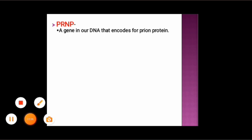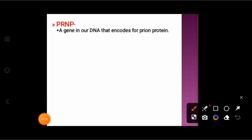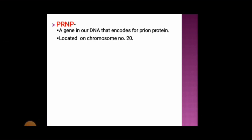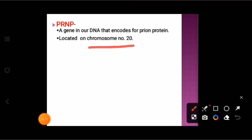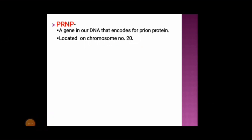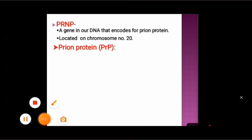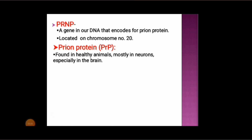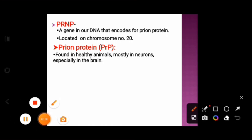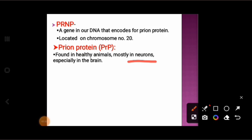First is PRNP — basically this is a gene, a gene in our DNA that codes for prion protein, and this gene is located on chromosome number 20. Next is prion protein, which is denoted by PrP. Basically, this is found in healthy animals, mostly in neurons and especially in the brain.